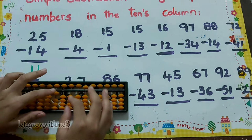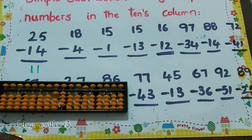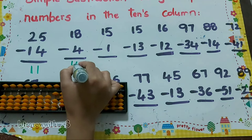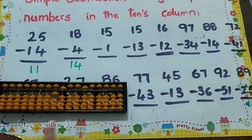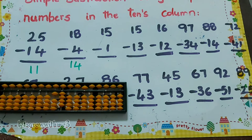Next one, 18: minus 4, minus 5 plus 1, so the answer is 14. Next one, 15 minus 1: how to do minus 1? Minus 5 plus 4, so the answer is 14.